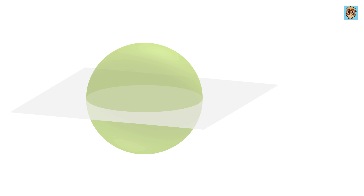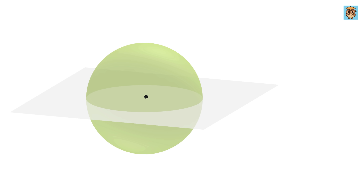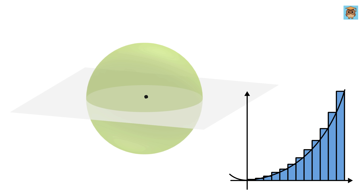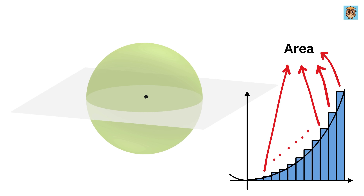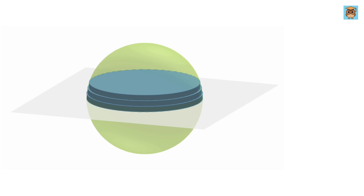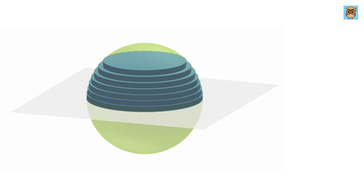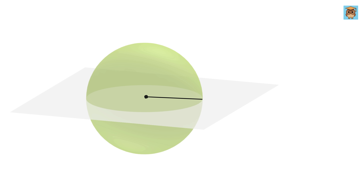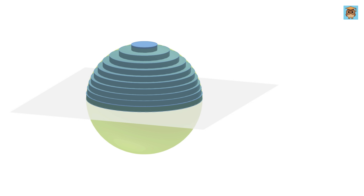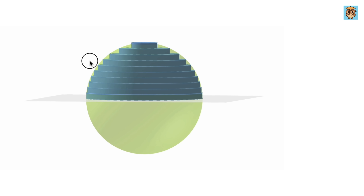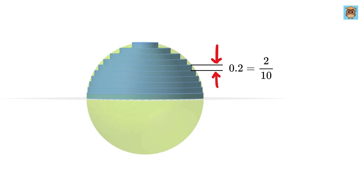Assume we consider a hemisphere where the center is at the origin. Just as with single integration we divide a curve into small rectangular slices and sum their areas, here we consider the hemisphere as made up of a collection of disks of very small thickness. For example, let us consider a hemisphere of radius 2 units, approximated as a collection of 10 evenly placed disks. The thickness of each disk will be 2/10, or 0.2.